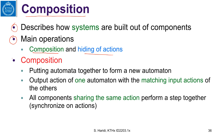What is composition? It is putting automata together to form a new automaton, and we match the output action of one automaton with the matching input actions of other automata. The basic idea is that if you match output actions with input actions, all components that share the same action will perform a transition or computation step simultaneously. We say these are synchronized actions.